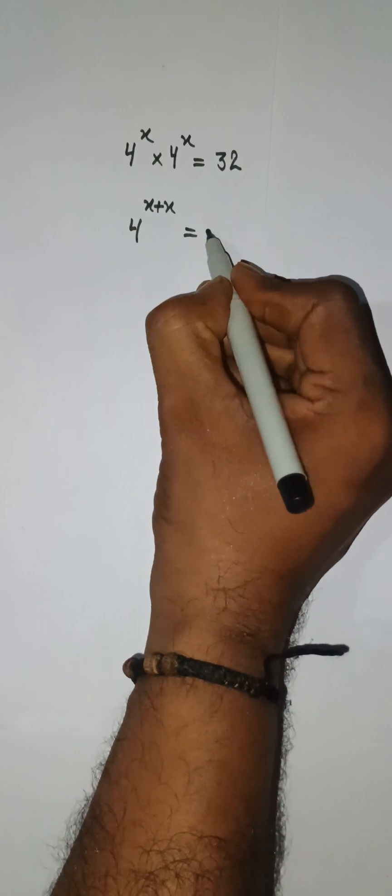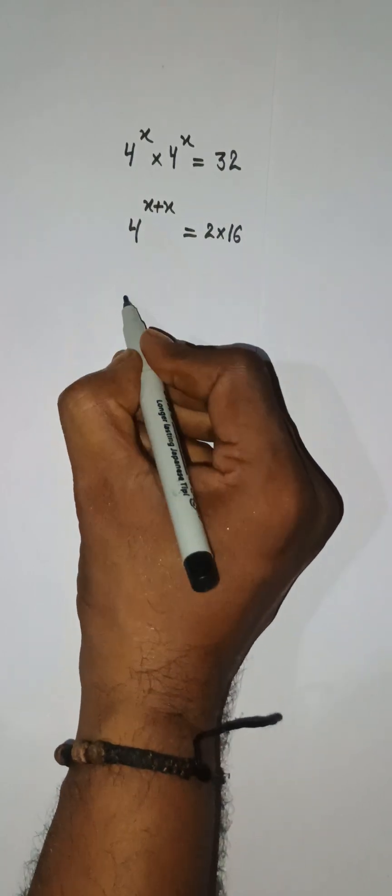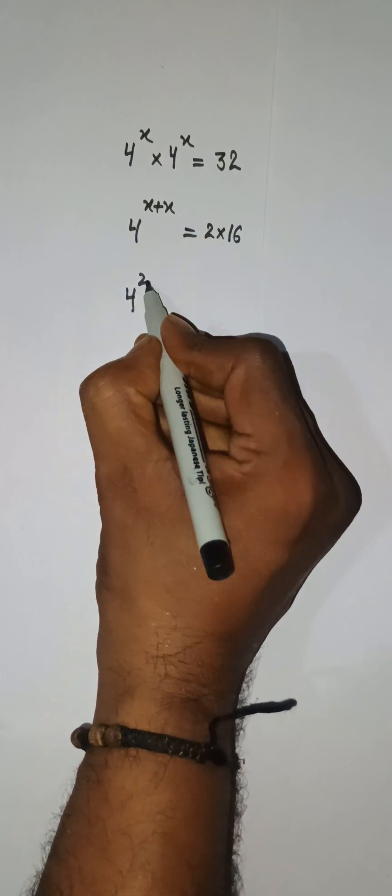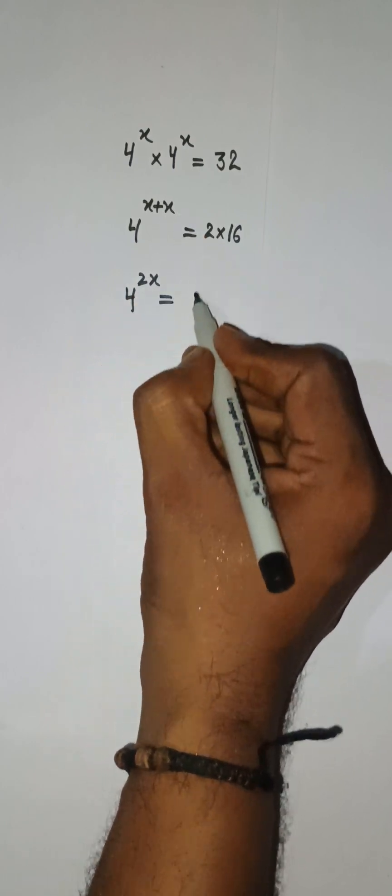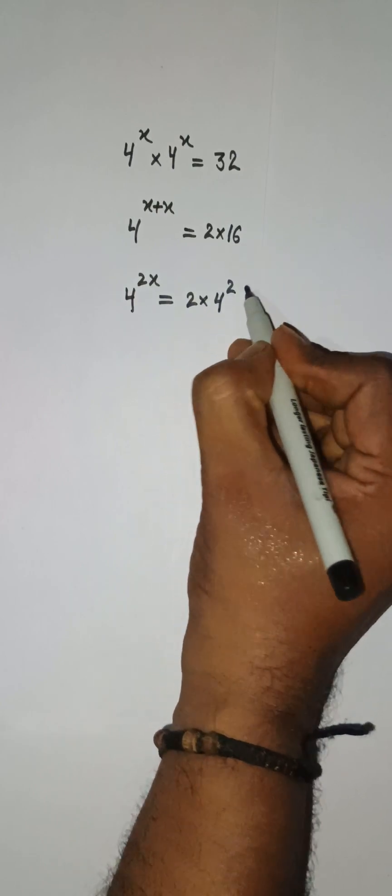And then 32 can be written as 2 times 16. So here 4 to the power x plus x is 4 to the power 2x. And here I can write 2 multiply and 16 can be written as 4 to the power 2.